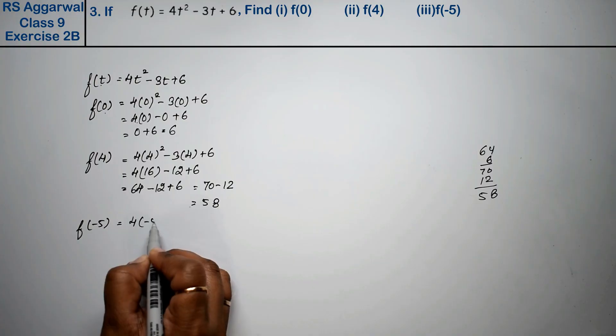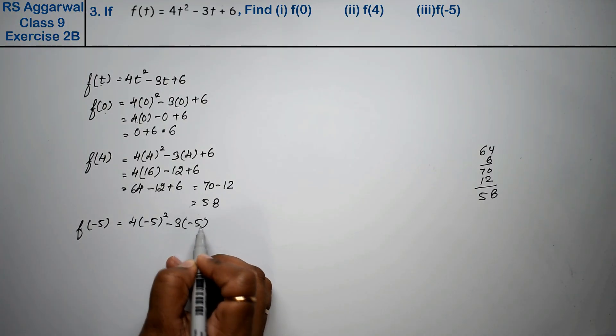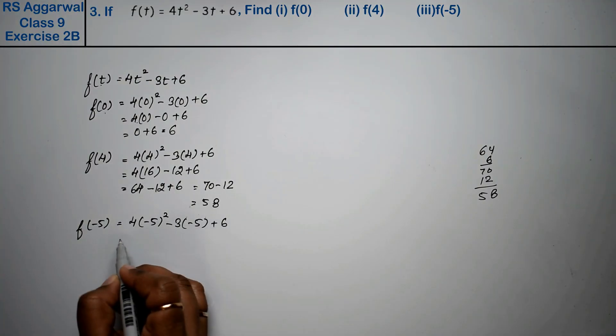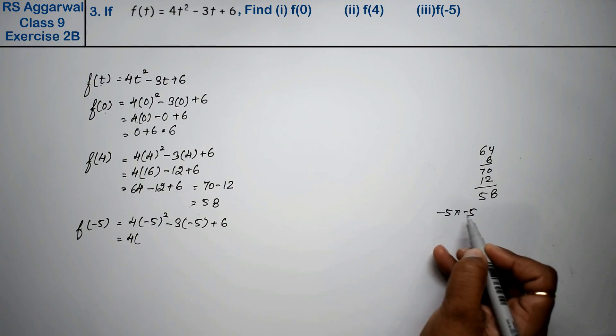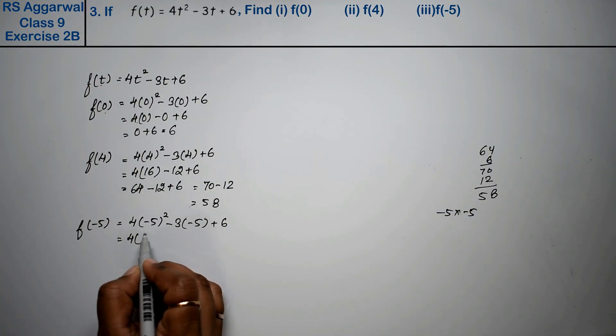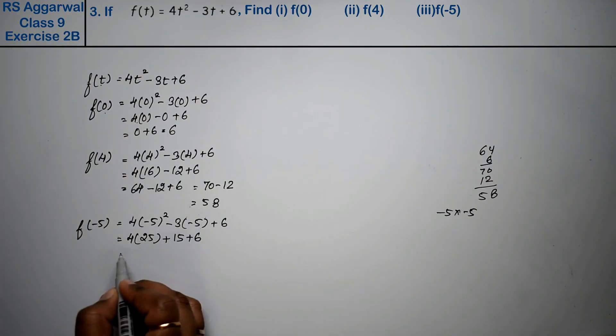Now f(-5): 4(-5)² - 3(-5) + 6. This equals 4 times (-5) times (-5). Minus times minus is plus, so 4(25) + 15 + 6.